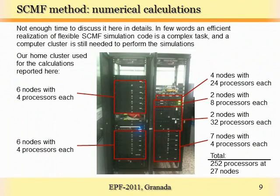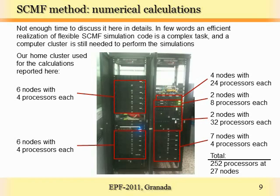Of course, there are many issues regarding how to perform the minimization of the free energy in an efficient way and how to implement it in an efficient and flexible computer simulation code. We don't have time to discuss this in detail, but once you have the computer code, you can go to a large computer, run it in parallel, and very quickly get some really interesting results. For example, on this picture you can see the cluster we have in our laboratory consisting of 252 processors distributed on 27 nodes, which we use for the simulations I will show you on the next slides.